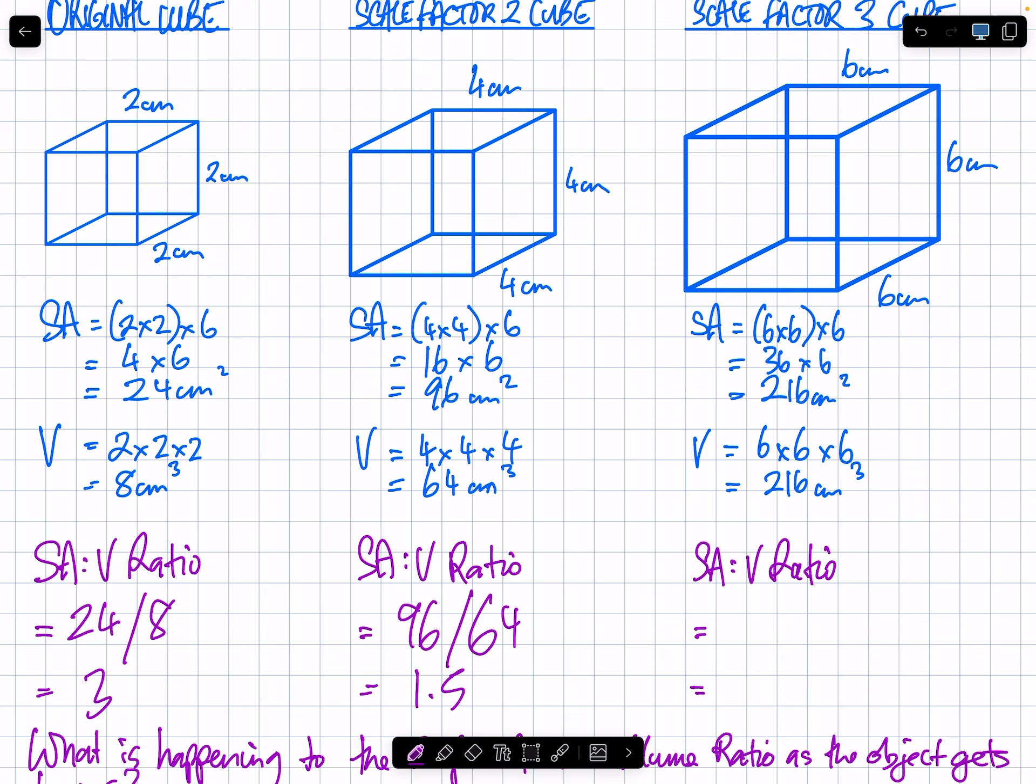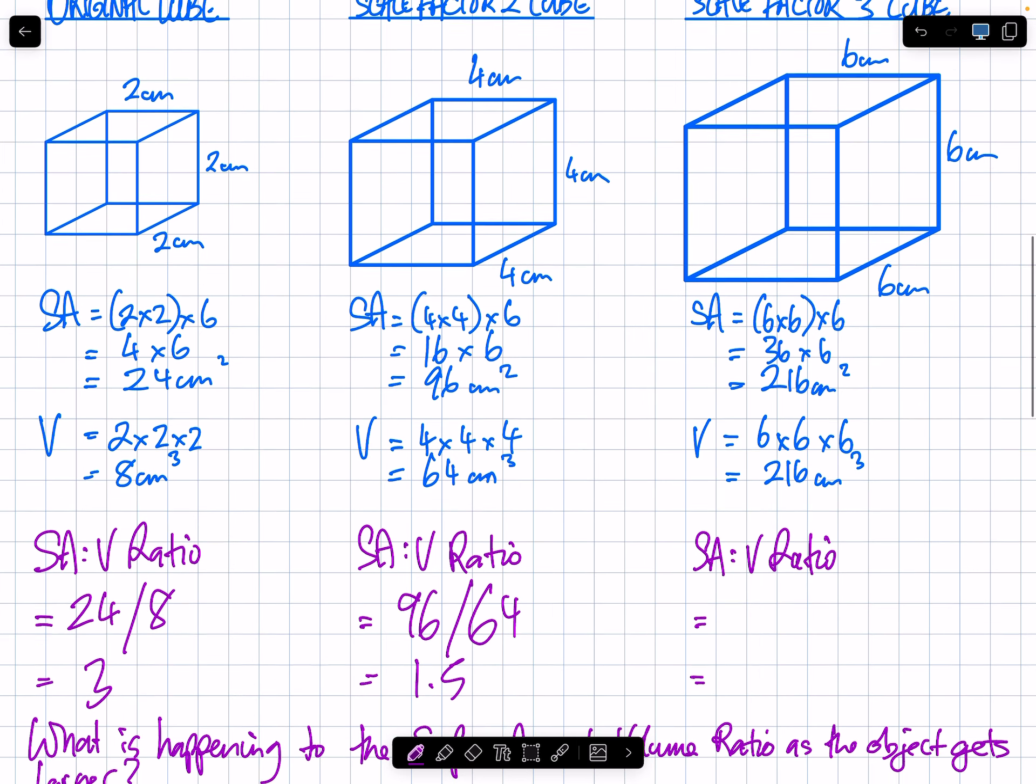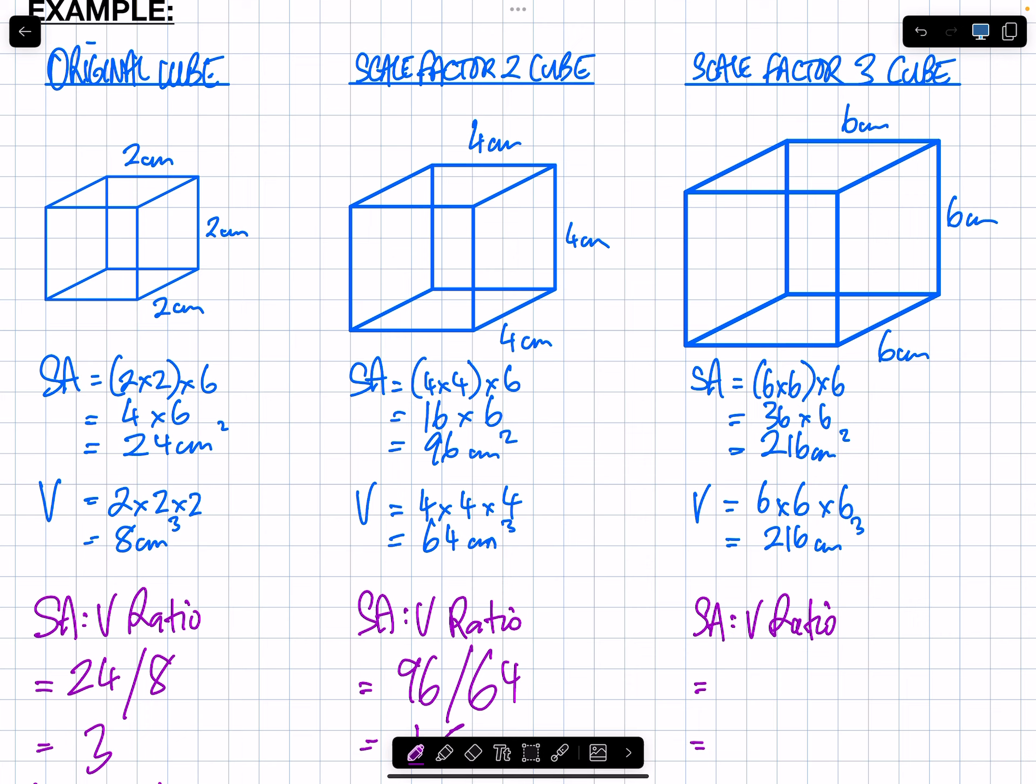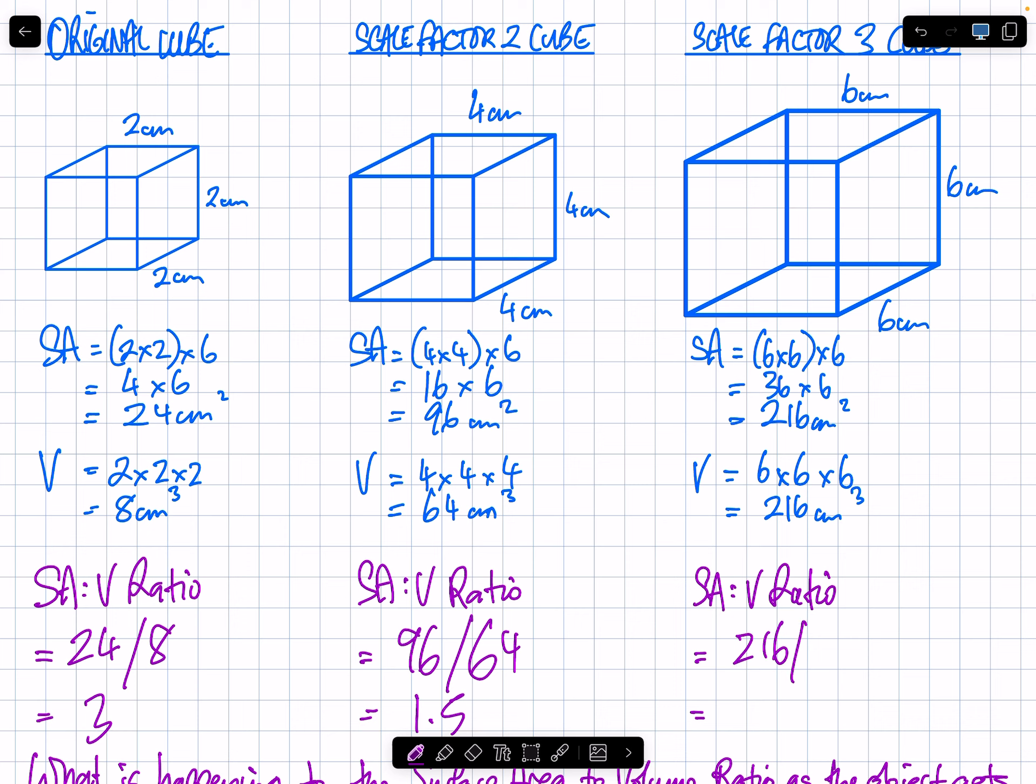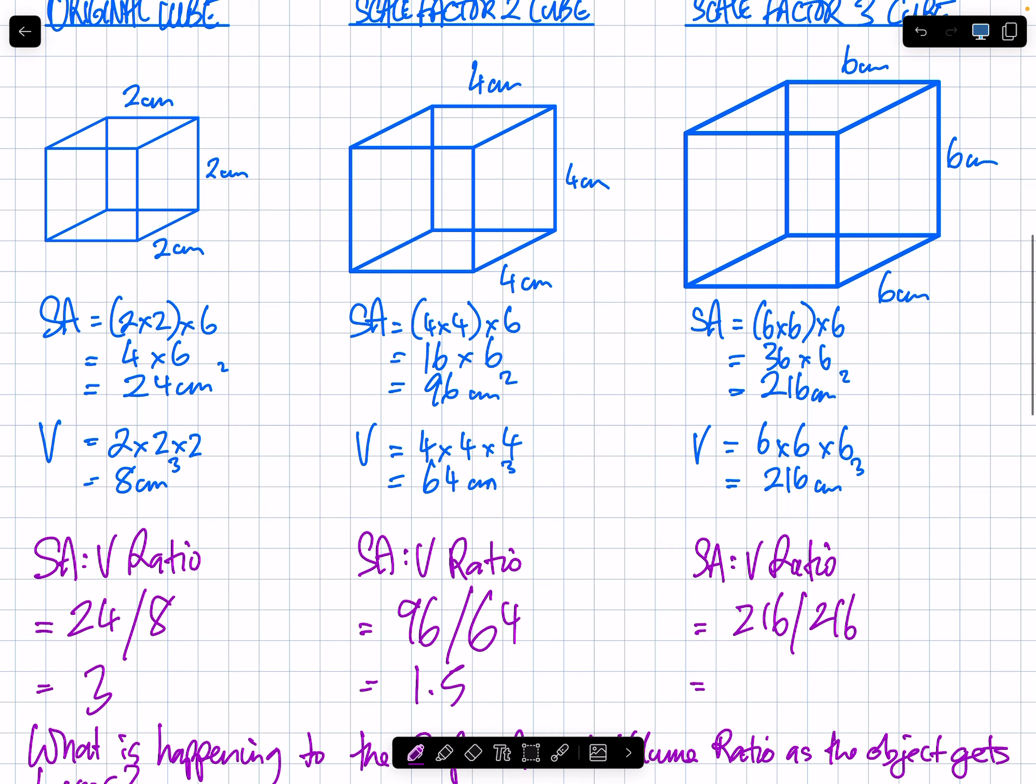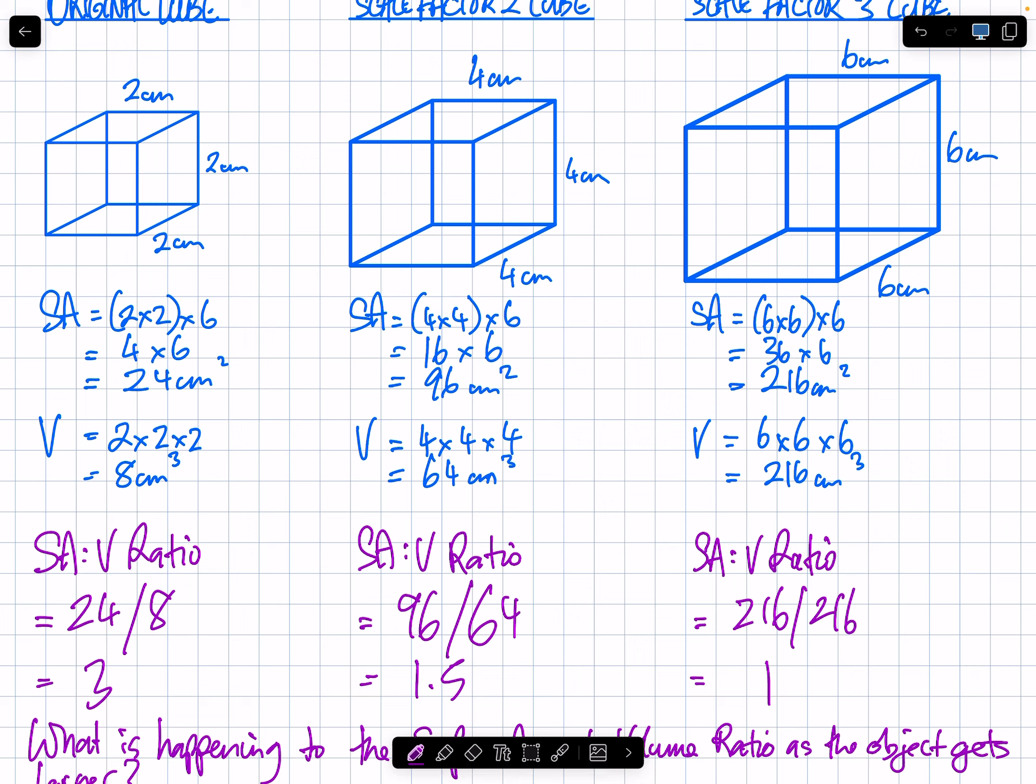What is that number saying? When it got bigger, the amount of surface area, the amount of skin you have, is a bit more than the amount of volume in your body. Let's take it to the third one, scale factor 3. What is the surface area of the scale factor 3 cube there? 216 divided by, the volume is also 216. What's the scale factor going to be? What's happening, as you get bigger in size, what's happening to the comparison between the amount of skin you have compared to the volume? It's getting smaller. What is this saying? If you're baby-sized, you've got heaps of skin versus body space. As you get bigger, your body space gets bigger in comparison to your skin.